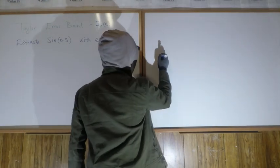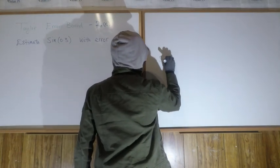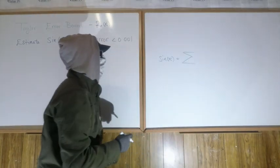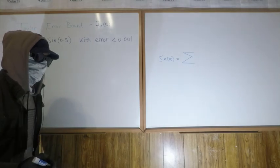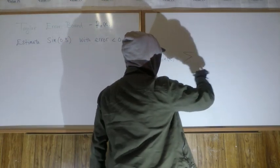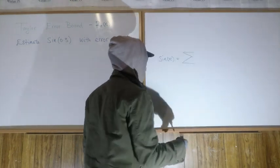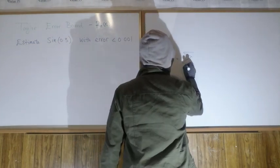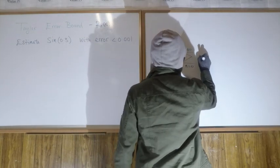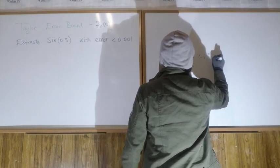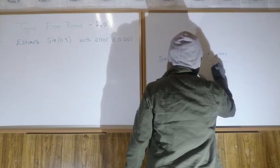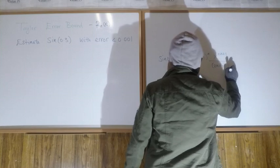We know what the Maclaurin series for sine looks like. Sine of x equals this infinite series — and this is what I mean: if you want sine of 0.3 in its full glory, you need an infinite sum. But we only need a certain degree of accuracy. So the Maclaurin series for sine is the sum from n equals 0 to infinity of negative 1 to the power n times x to the 2n plus 1 over 2n plus 1 factorial.